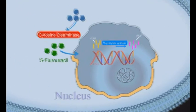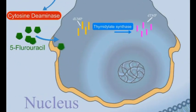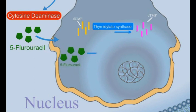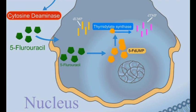The 5-fluorouracil molecules are transported into the fungal nucleus, where they are converted into the false nucleotide 5-FDUMP. This false nucleotide inhibits the thymidylate synthase enzyme and interferes with fungal DNA synthesis.